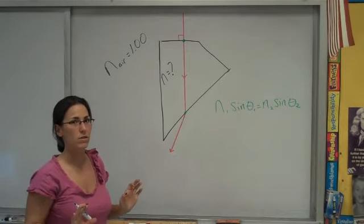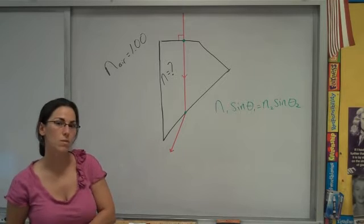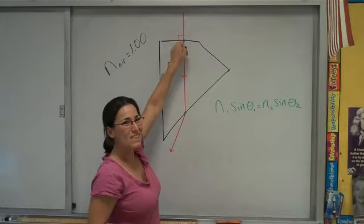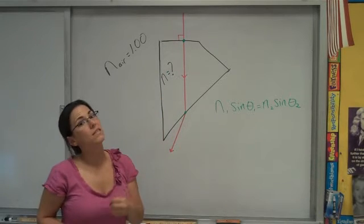And one of these boundaries is going to be so much easier to work with than the other. So my big hint is to look at this and think, which boundary would be the most useful? At boundary one, you can see that this light is entering along the normal. The incident angle is zero degrees.